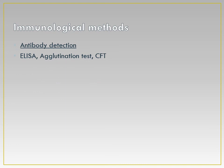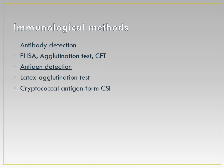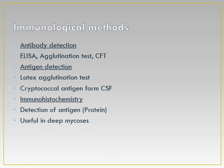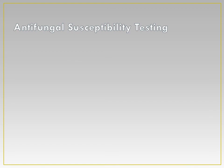Immunological methods include: antibody detection by ELISA, agglutination test, or complement fixation test; antigen detection, for example latex agglutination test and cryptococcal antigen detection from CSF; and immunohistochemistry, which detects antigens on cells of tissue sections using fluorescent-tagged antibodies that bind specifically to the antigens. This is useful for deep mycosis.